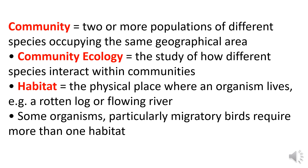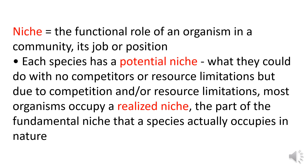A community is defined as two or more populations of different species occupying the same geographical area. Community ecology is the study of how different species interact within communities. In studying community ecology, we also talk about habitat — the physical place where an organism lives, like a rotten log or a flowing river. Some organisms, particularly migratory birds, require more than one habitat. The niche is the functional role of an organism in a community — its job or position. Each species has a potential, or fundamental, niche, but due to competition and resource limitations, most organisms occupy a realized niche — the part of the fundamental niche that a species actually occupies in nature.